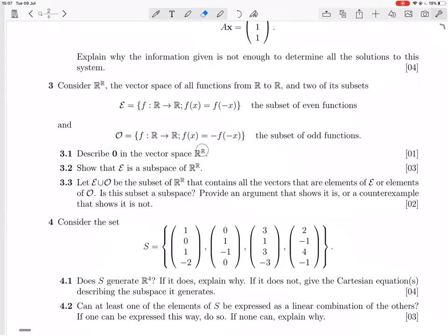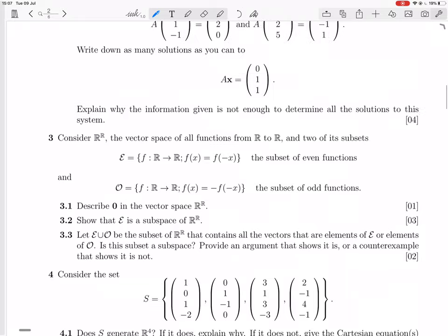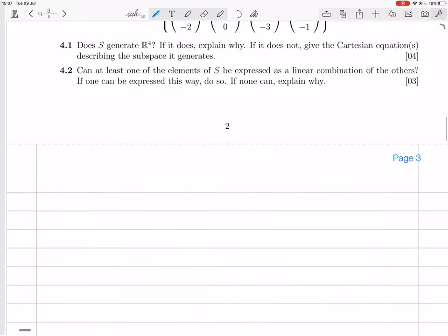Describe the zero vector in the vector space R^R. So that'll be the zero function, right? The function that's constantly zero. So let's try that out. f of x equals zero for all x in R.